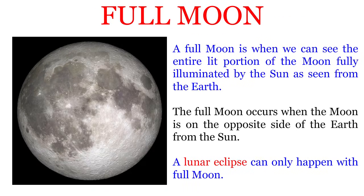A full Moon is when we can see the entire lit portion of the Moon fully illuminated by the Sun as seen from the Earth. The full Moon occurs when the Moon is on the opposite side of the Earth from the Sun. A lunar eclipse can only happen with a full Moon.